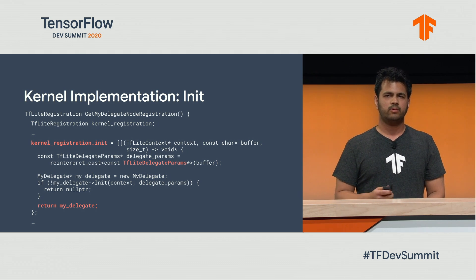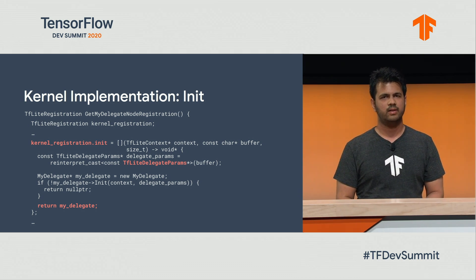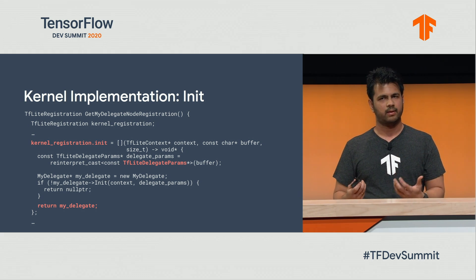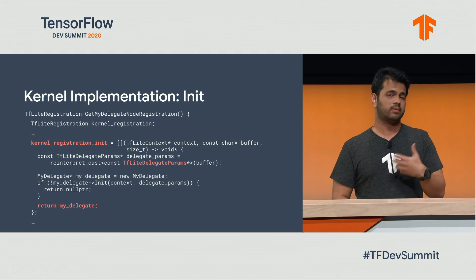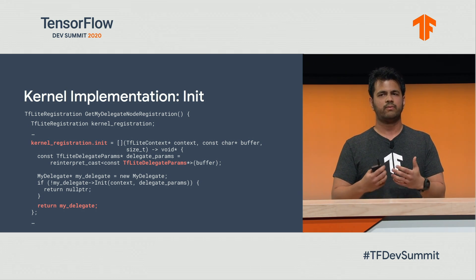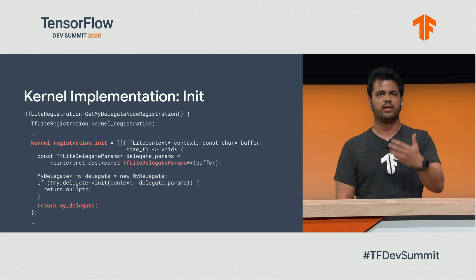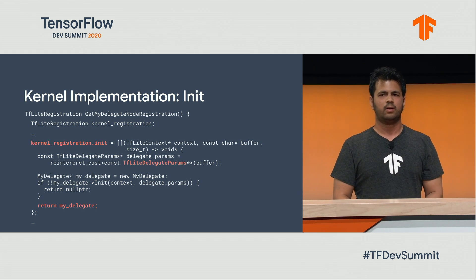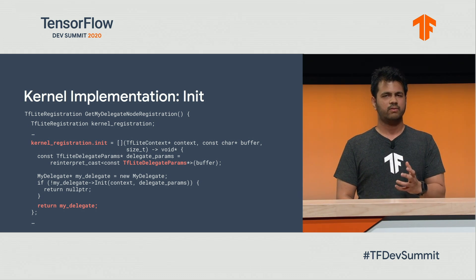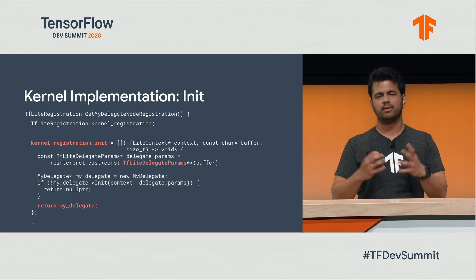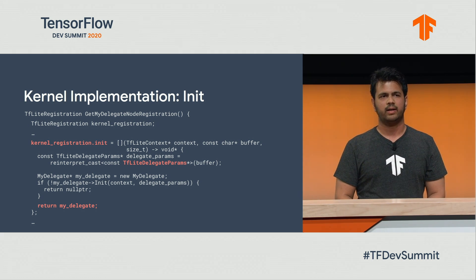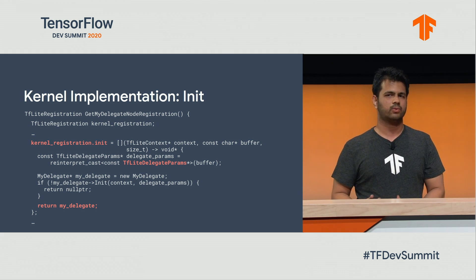There are two main methods that need to be implemented for this kernel registration. The first one is init. This method is run at initialization time, that is when delegation is happening. Here, the delegate kernel gets a list of delegate params, which is essentially the nodes it is responsible for, and input output tensors and information like that. With this information, the delegate is free to initialize any opaque object that it can create. The return type is void star, so the runtime is completely agnostic to what type of object is written as long as it is not null.